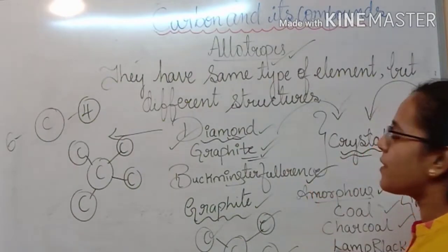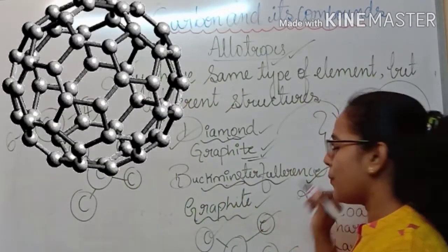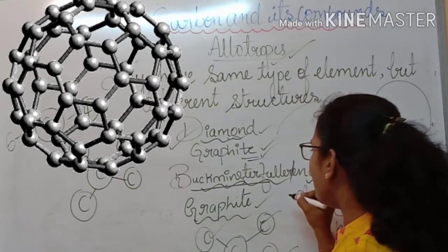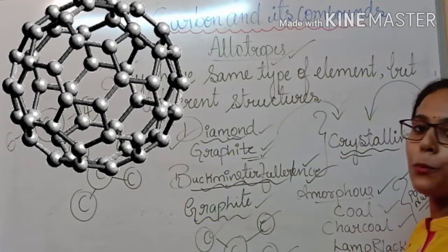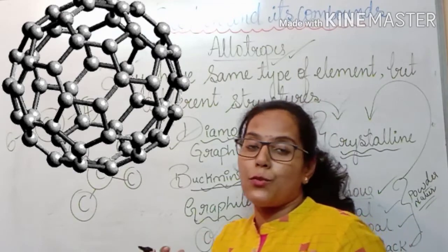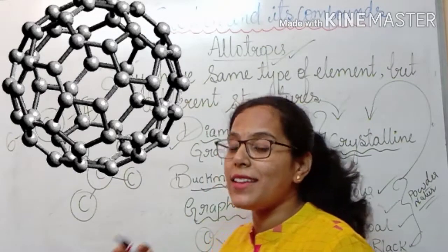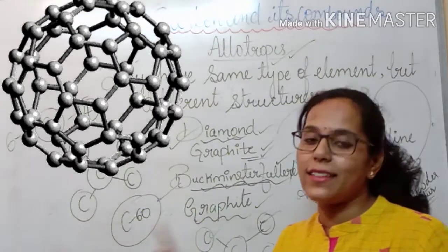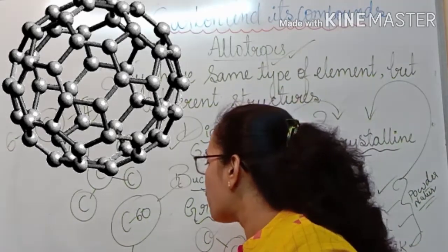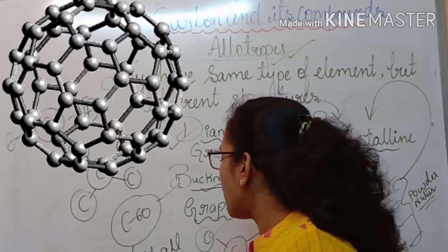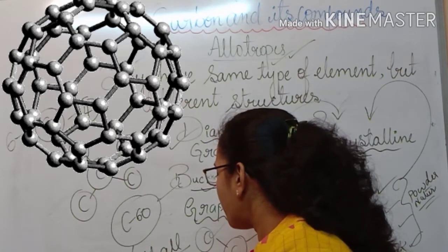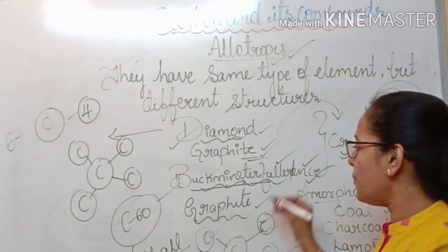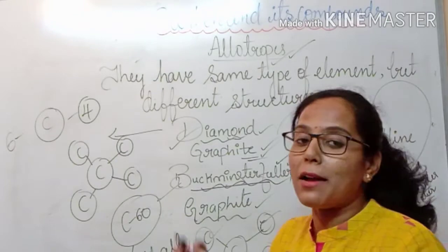So now let us focus towards the last type of allotrope, which is Buckminsterfullerene. It was discovered by a US scientist by the name Buckminster Fuller, and as a result this allotrope got the name Buckminsterfullerene. The first allotrope of Buckminsterfullerene found was C60, where 60 carbon atoms were arranged in the structure of a football, or a geodesic dome. That was the structure found for Buckminsterfullerene.